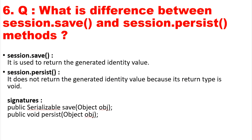The next question is: what is the difference between session.save() and session.persist() methods? Both are used to save the object into the database. session.save() returns the generated identity value — if we want the identity value of the saved object, we use session.save(). If we don't want to return any serializable identity ID, we use session.persist(), because it does not return the generated identity value and its return type is void. The signature of save() is public Serializable save(), and persist() has return type void.